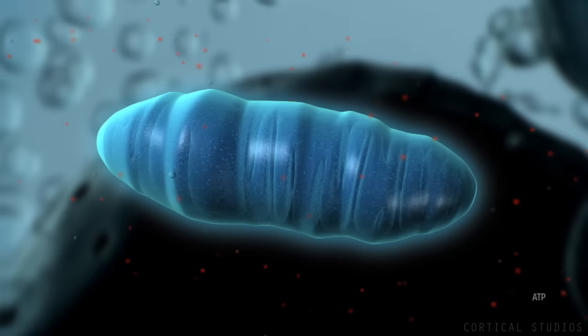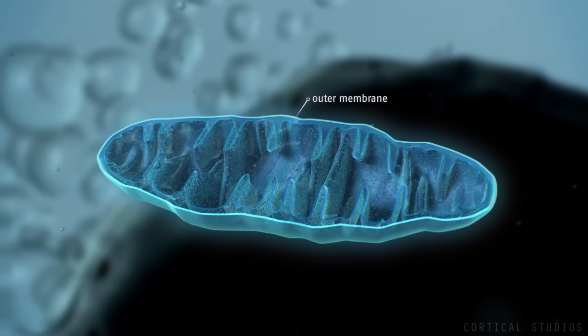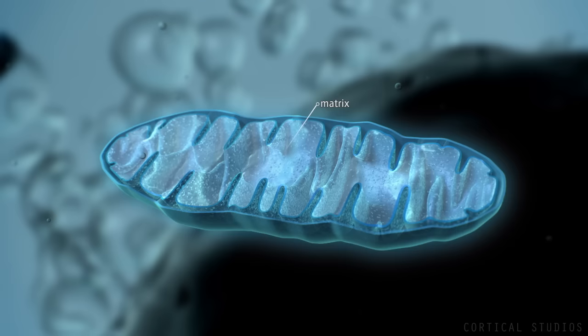Mitochondria consist of two membranes: an outer membrane separating it from the cytosol, and an inner membrane surrounding the matrix. The area between these membranes is called the intermembrane space.